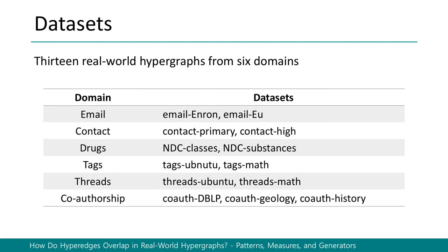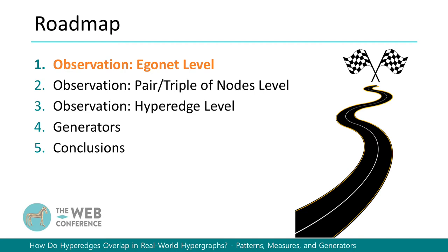Throughout this work, we use 13 real-world hypergraphs from six different domains. We examine overlapping patterns of hyper-edges in real-world hypergraphs and verify them by comparing with those in random hypergraphs obtained by HyperCL. We investigate the overlaps of hyper-edges at three different levels, and first let's take a look at the egonet level.